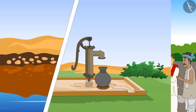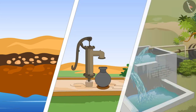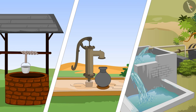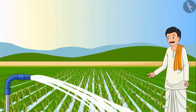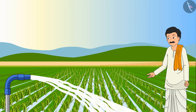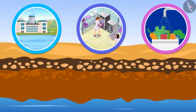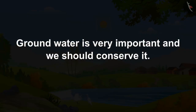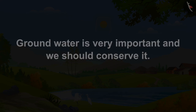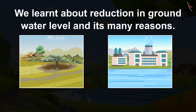Groundwater comes through hand pumps, tube wells, wells, etc. In India, the farmer is dependent on groundwater for agricultural work. There is also a great demand for groundwater in industries, and it is widely used in everything from food processing to textile industries.